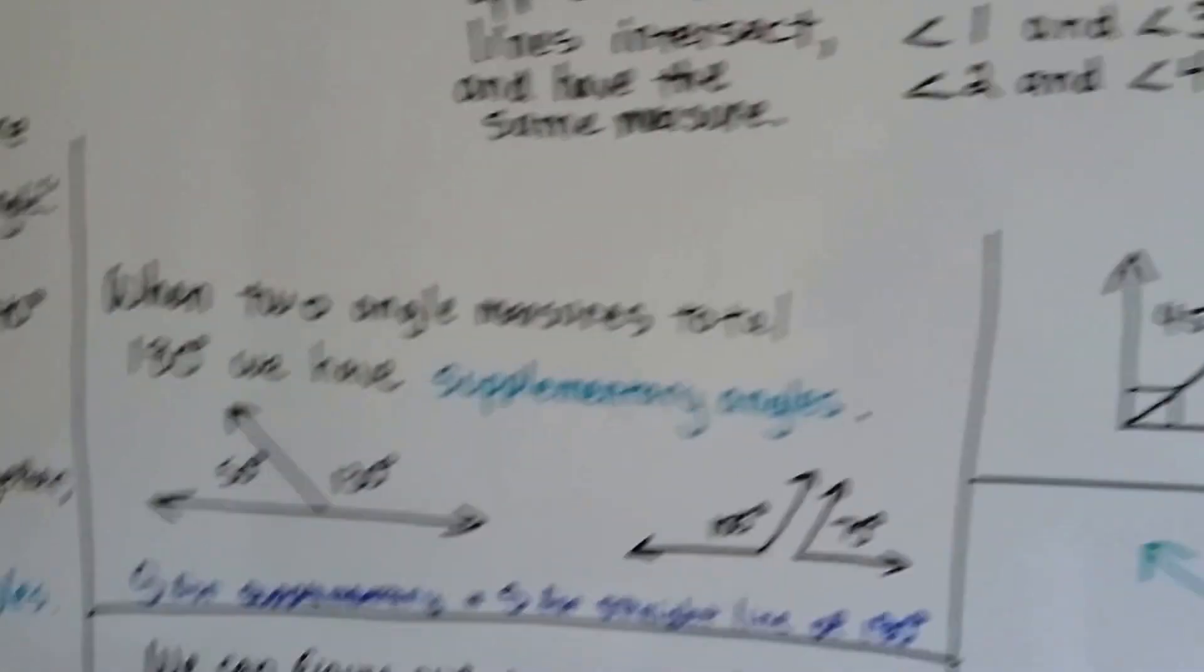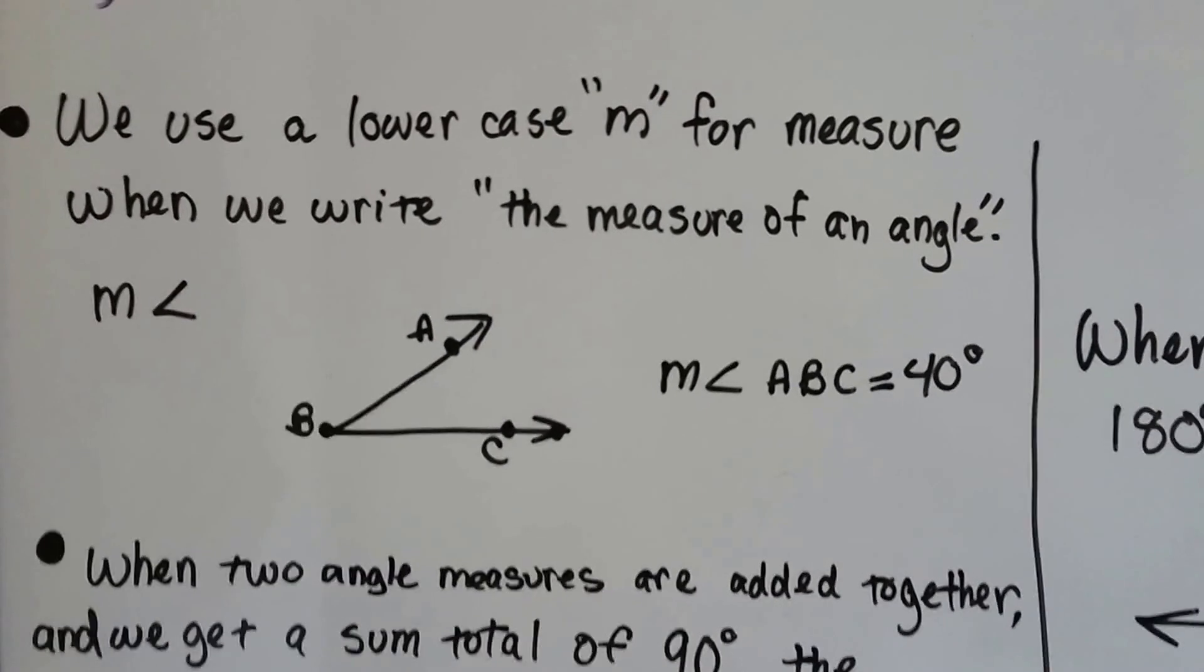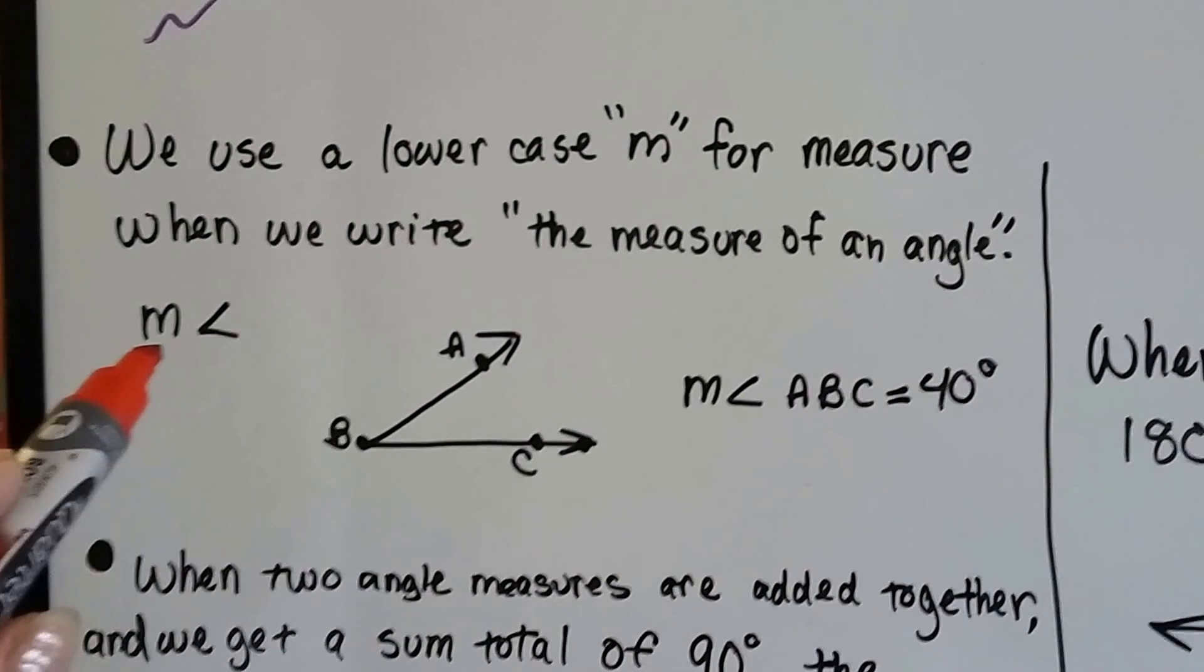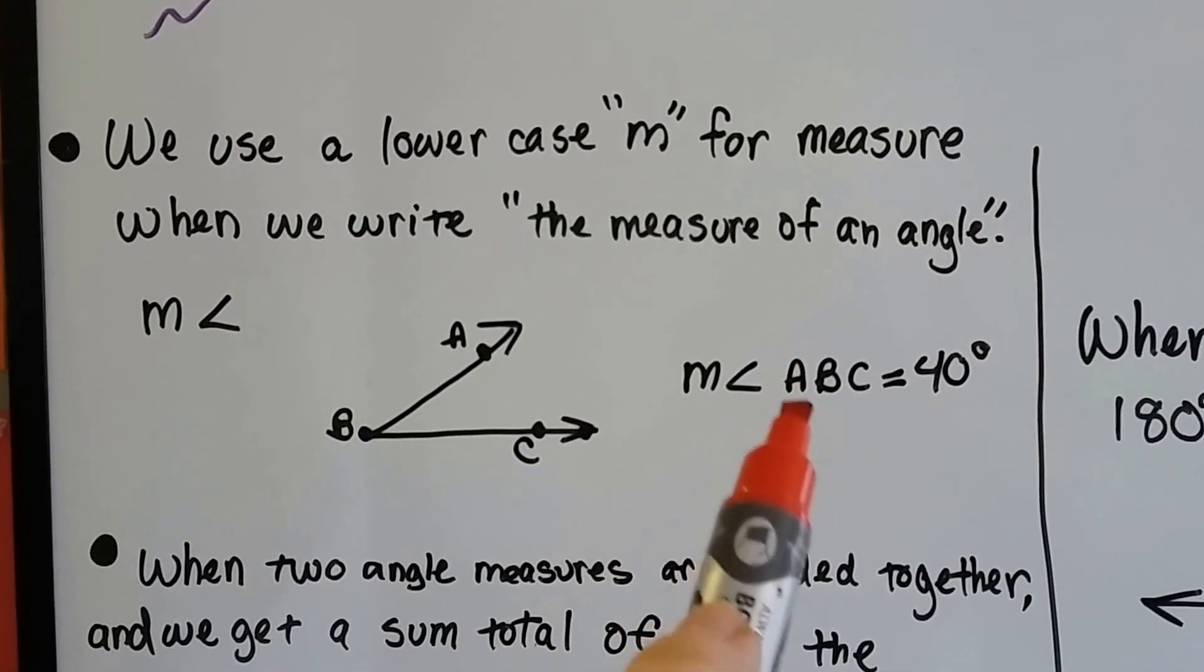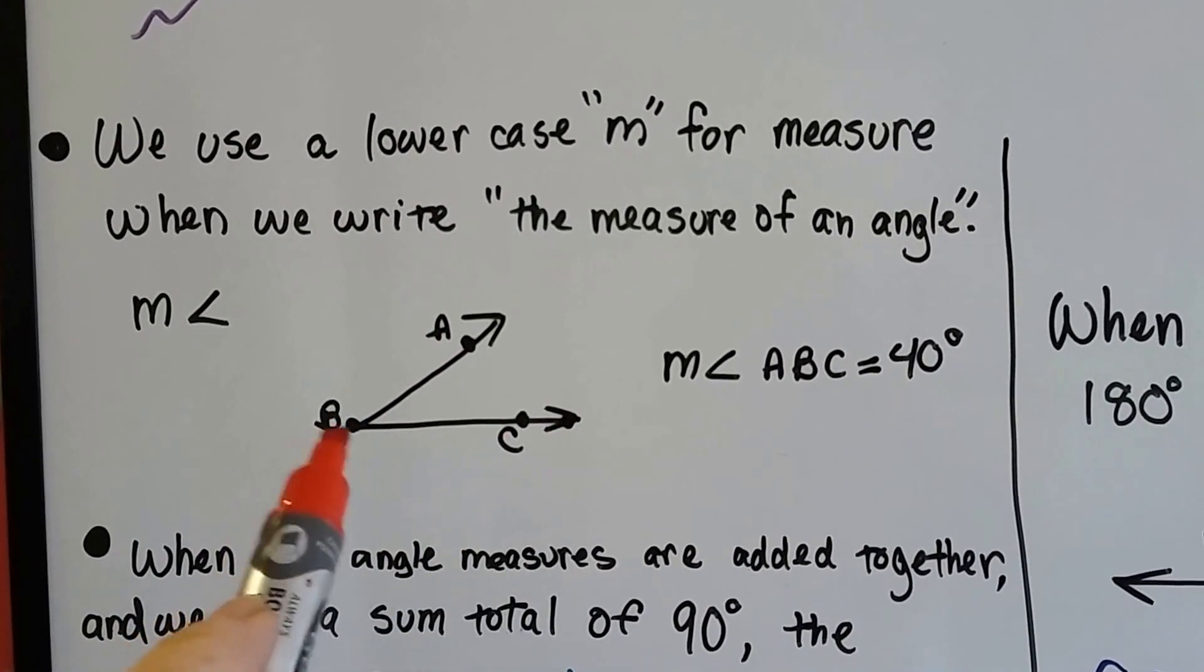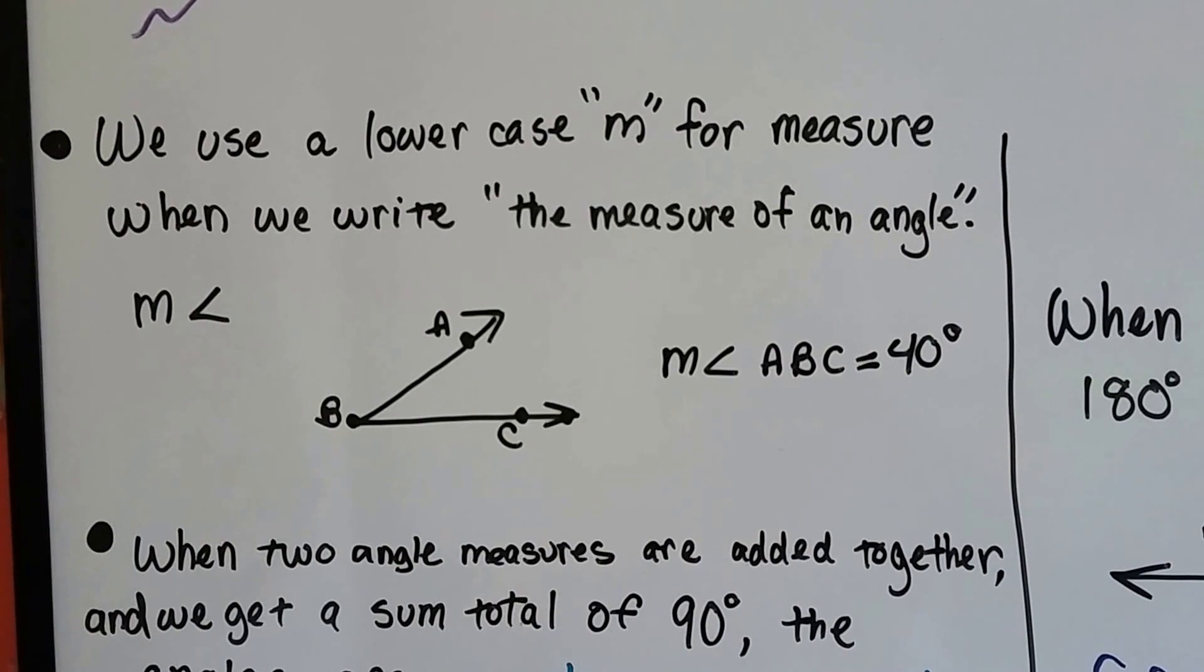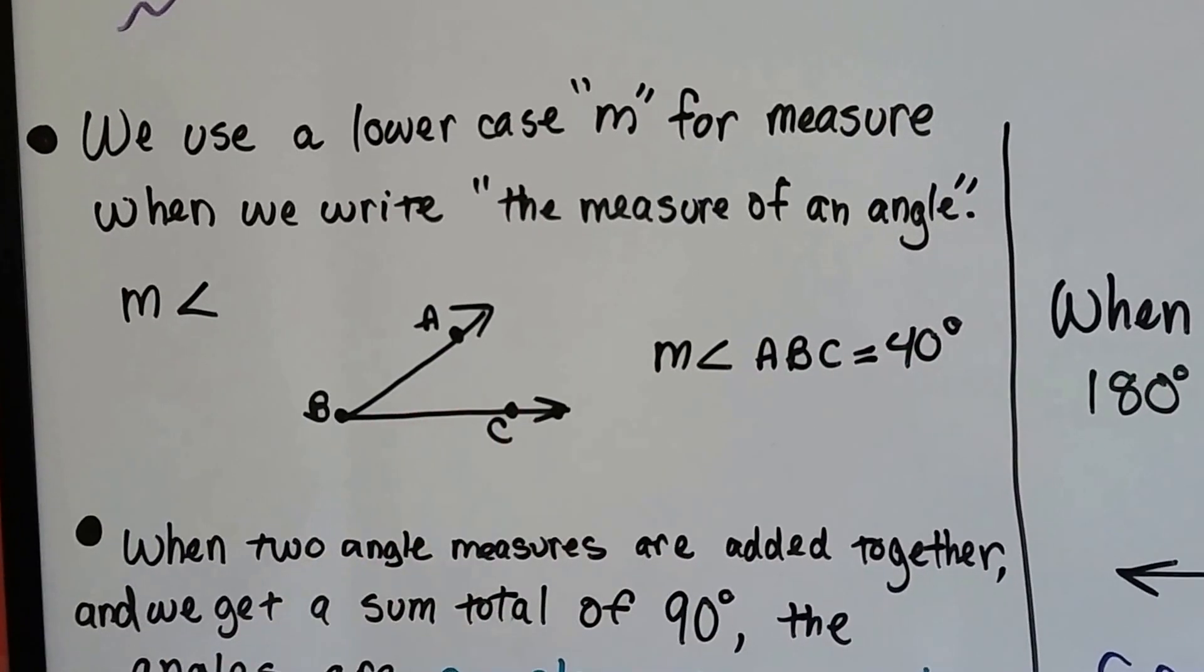We use a lowercase m for measure when we write the measure of an angle. When you see an m and the little angle sign, that means measure of an angle. The measure of angle ABC equals 40 degrees. The B is the vertex. The middle letter is always the vertex. So the measure of angle ABC is 40 degrees. It's a 40 degree angle inside of here.